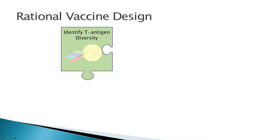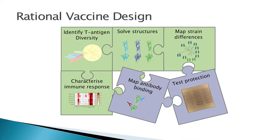So how does this all fit together? We've identified T antigen diversity — we know what's out there. We know how the immune system sees what's out there. We've solved the structures — we know what our vaccine is. We know how they're similar and how they're different. What I'm currently doing is looking at where antibodies actually bind at the atomic level, and putting that into assays that test whether those antibodies actually kill bacteria — whether they're actually protective. Thank you.